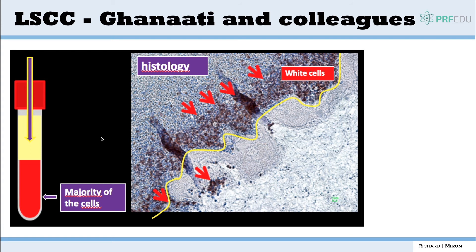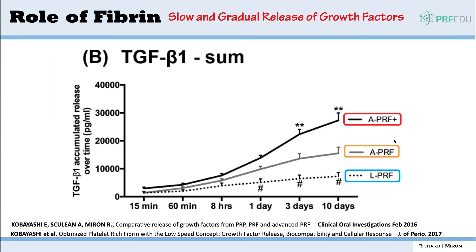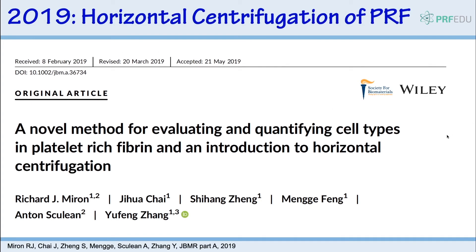Here's histology from Dr. Ghanaati's lab showing that when you spin very fast, all the cells go to the bottom. Looking histologically at the layer between the yellow plasma layer and the red blood cell layer, a lot of the white blood cells — shown in brown — are located right at the buffy coat at the bottom of the tubes. With the original PRF protocols spinning faster for longer you get bigger separation; slower and shorter yields more cells and more growth factors, confirmed by our team in Bern with Dr. Misako Kobayashi.